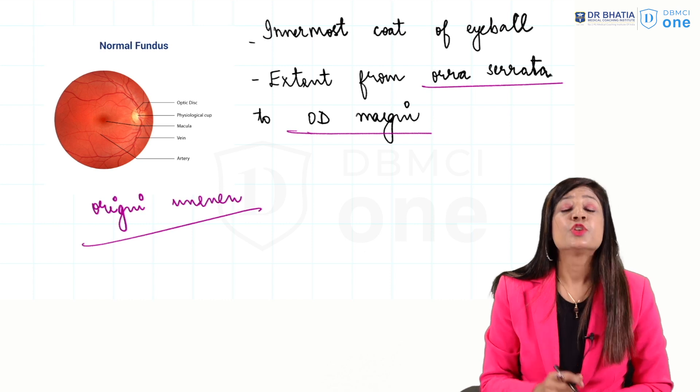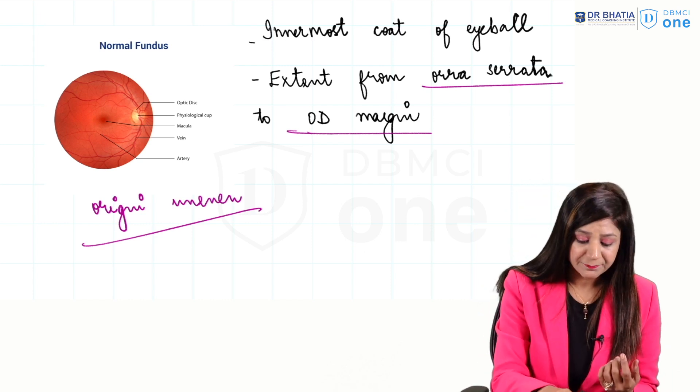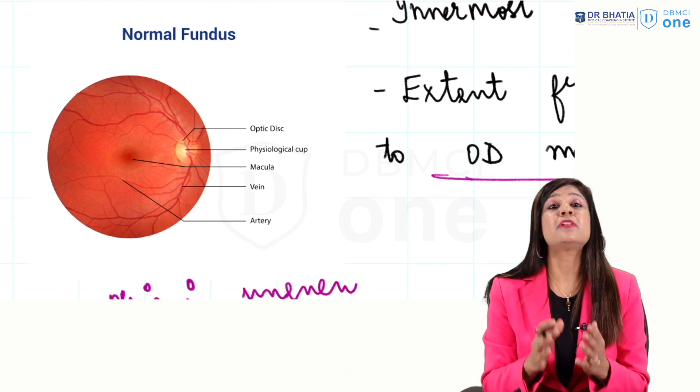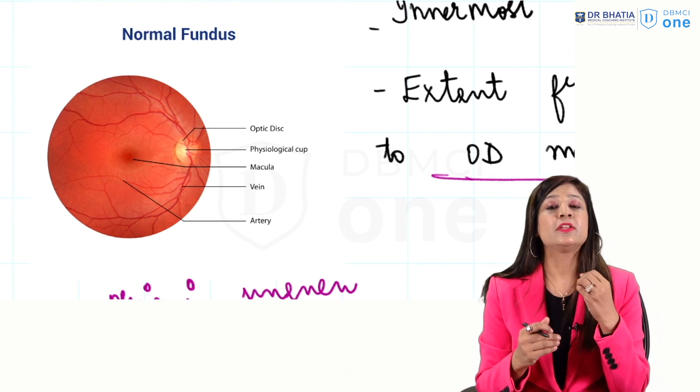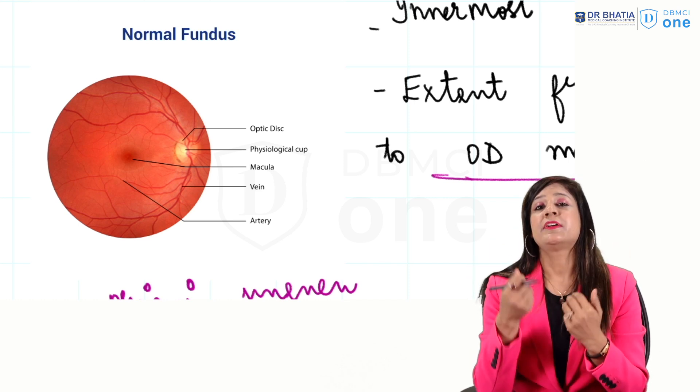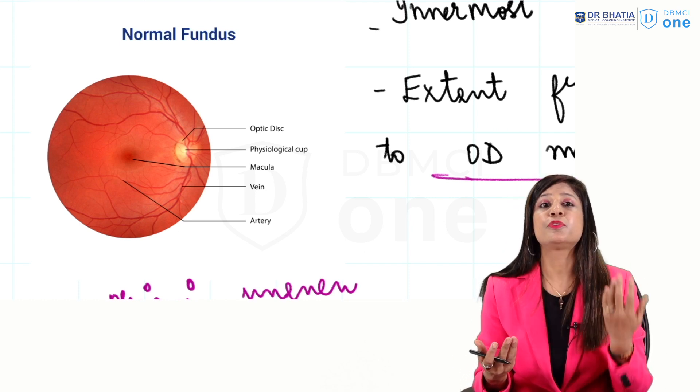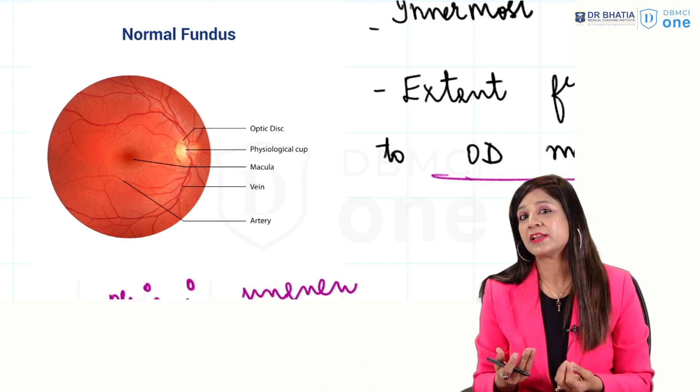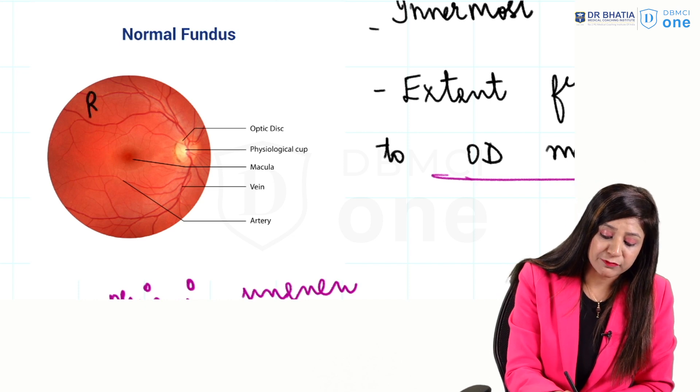When you look at the retina, this is a normal fundus. First, you have to understand what do you mean by fundus. When you see the retina from a distance with an ophthalmoscope, whether direct or indirect, the view you are going to get is called a fundus.